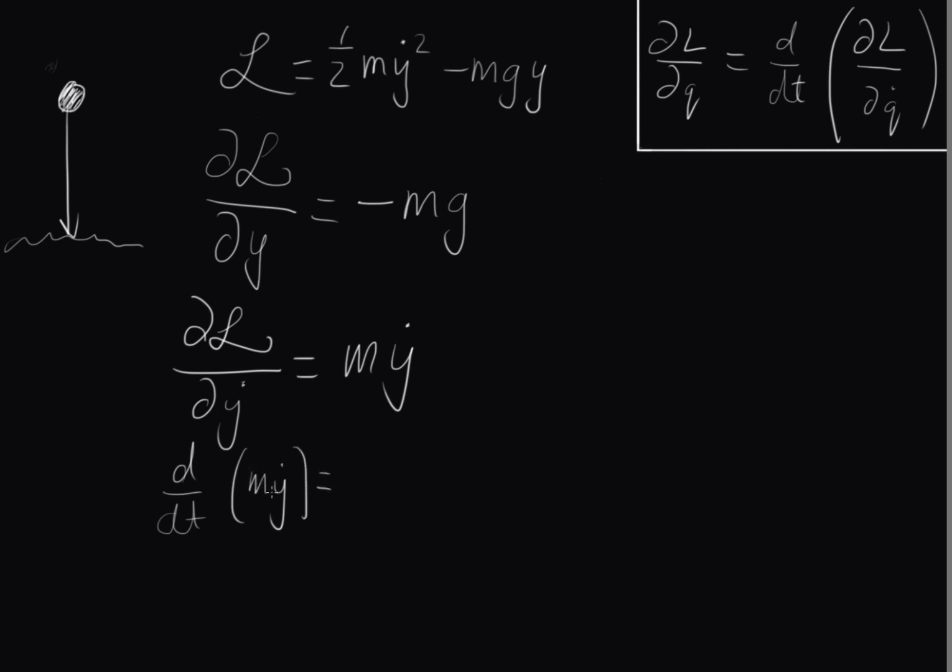And now let's take the time derivative of this. So d dt of m y dot - if we differentiate it with respect to time, the m doesn't change. However, this does depend on time, so this would become m y double dot. This double dot signifies the fact that this is the second time derivative of y. If we've differentiated it once to get y dot, we're differentiating it again to get m y double dot.